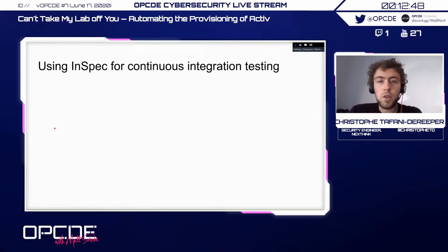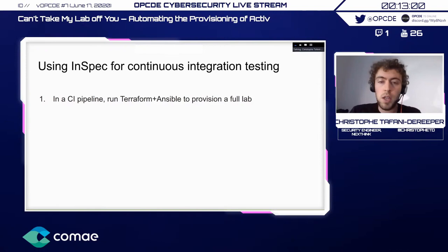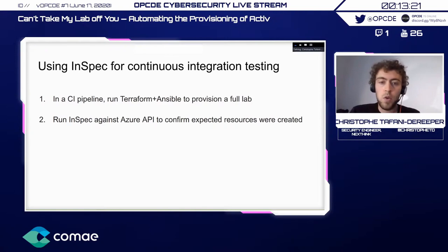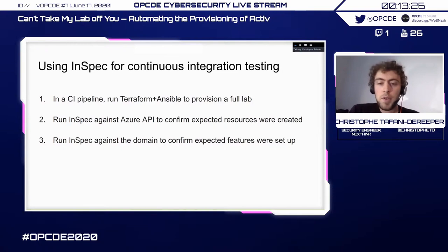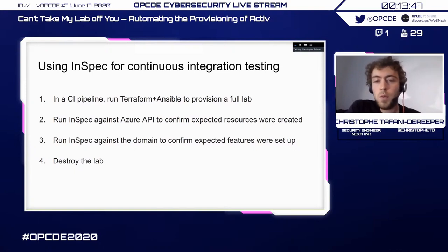How do you use InSpec in a continuous integration fashion? You have a CI pipeline — something like GitLab CI, GitHub Actions, or CircleCI — then you run Terraform plus Ansible, and at the end of that step you have a full Active Directory lab ready to use. Then you run InSpec against the Azure API to confirm the resources are there — the right VMs, right networks, and so on. Then you go more granular: check for the right users, groups, features, and programs installed. After that, you just burn the lab down. This takes time since it's end-to-end testing, but it gives you strong confidence that you didn't break anything when adding new features or reviewing pull requests.